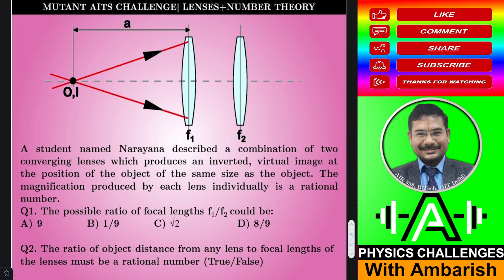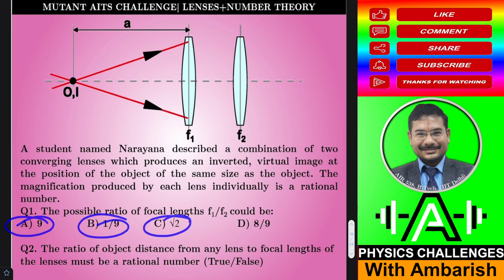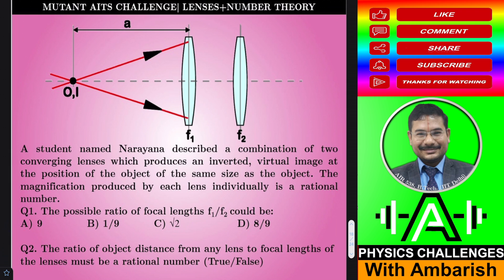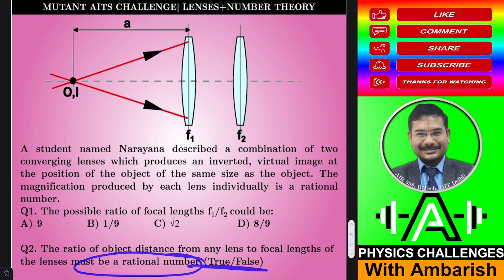There are two questions asked. The first question is: what are the possible ratios of focal lengths F1 upon F2? The four options are 9, 1/9, √2, and 8/9. The second question asks whether the ratio of object distance from any lens to the focal length of that lens must be a rational number — true or false.